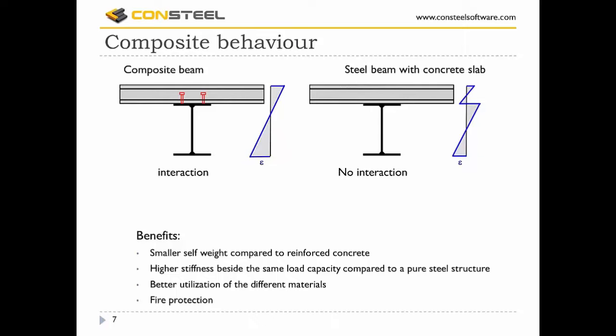The composite behavior is ensured by headed studs, as shown on the top left picture. There is an interaction between the two materials and they work as one, while the right picture shows when there is no connection between the two materials. This composite behavior provides benefits: smaller self-weight compared to a reinforced concrete section, higher stiffness with the same load capacity compared to a pure steel structure, and better material utilization — the steel section carries tension forces and the concrete carries compression forces.